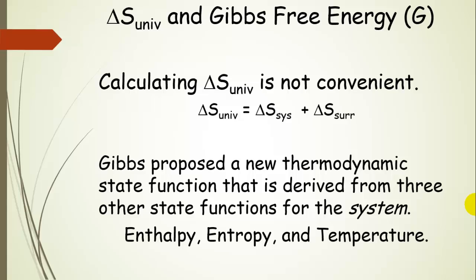Calculating the change in entropy for the universe is not convenient. And so to solve this problem, Gibbs proposed a new thermodynamic state function that's derived from three other state functions for the system. So we're going to be looking at the system. And of course, we've seen enthalpy, delta H. We've also seen entropy, delta S, and finally the temperature.